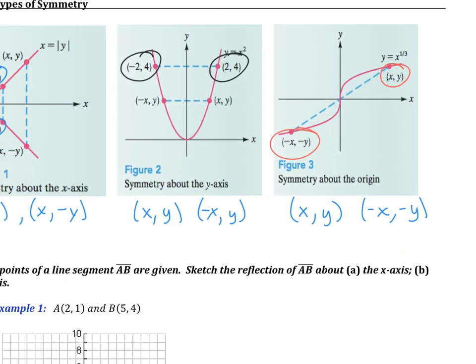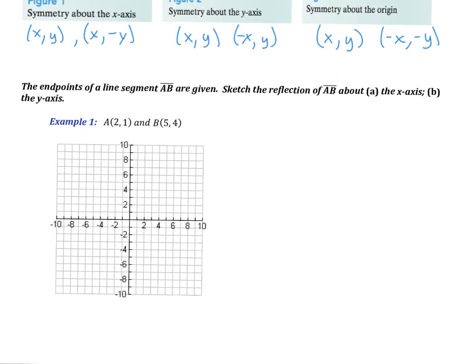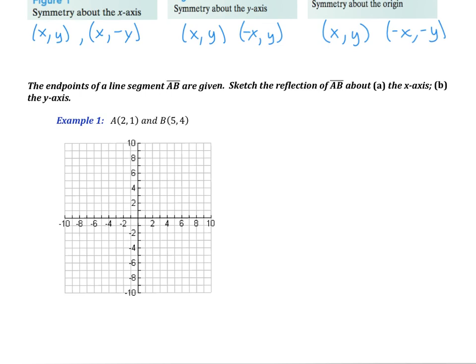Now here is one of the things you're going to have to be able to do. You're given the endpoints of a line segment AB. You're supposed to sketch AB about the x-axis and then about the y-axis. To start, let's just sketch AB — we have the point (2, 1) and the point (5, 4), giving us this line segment here.